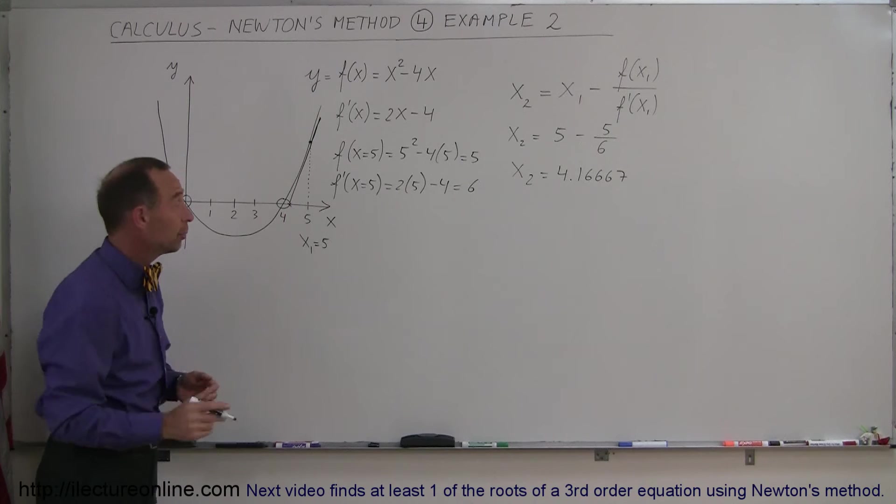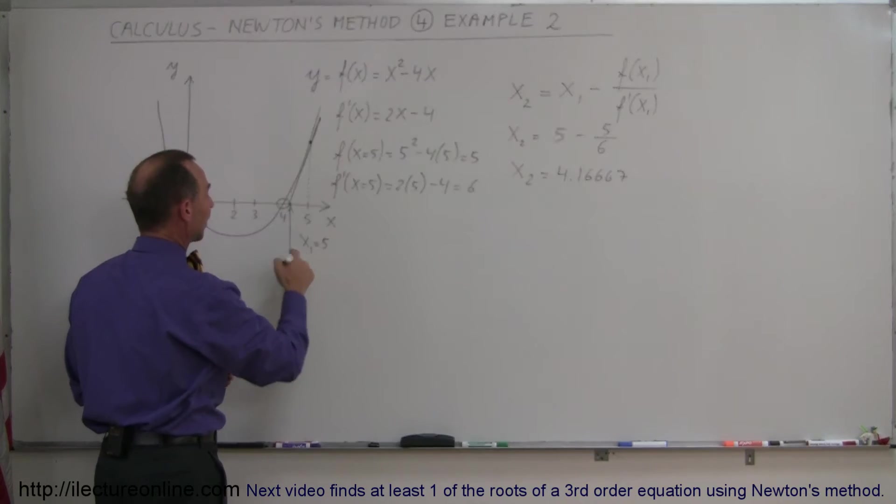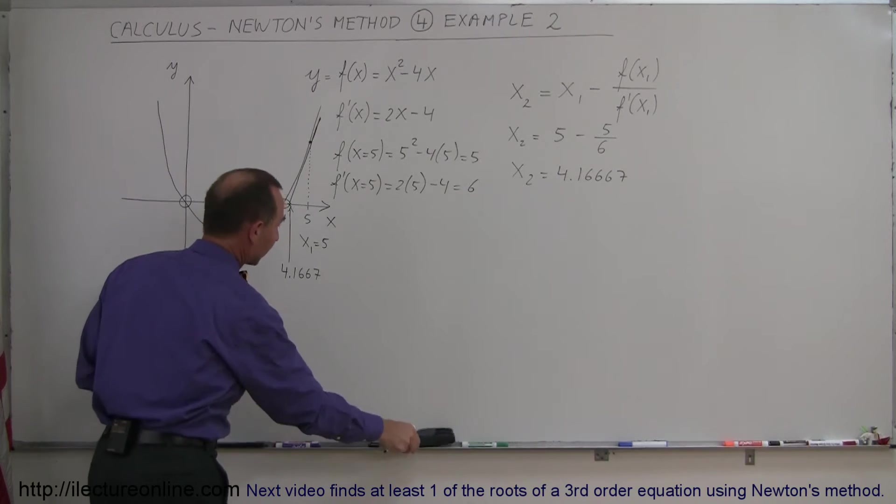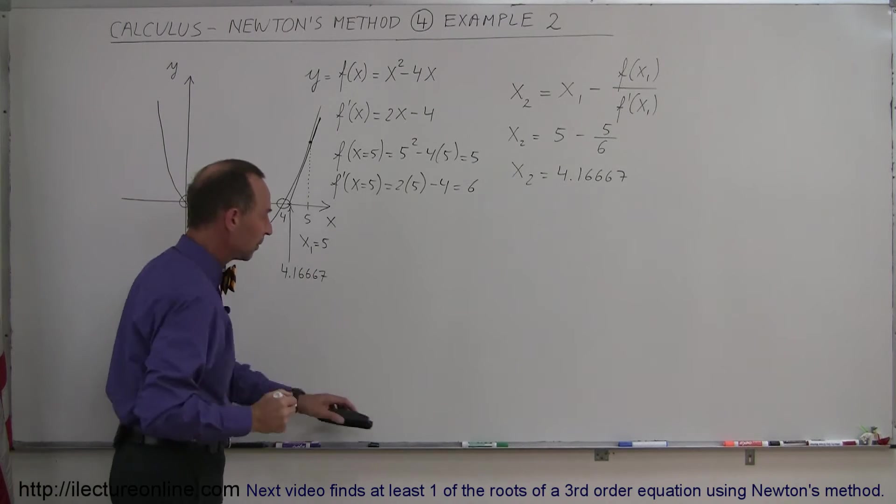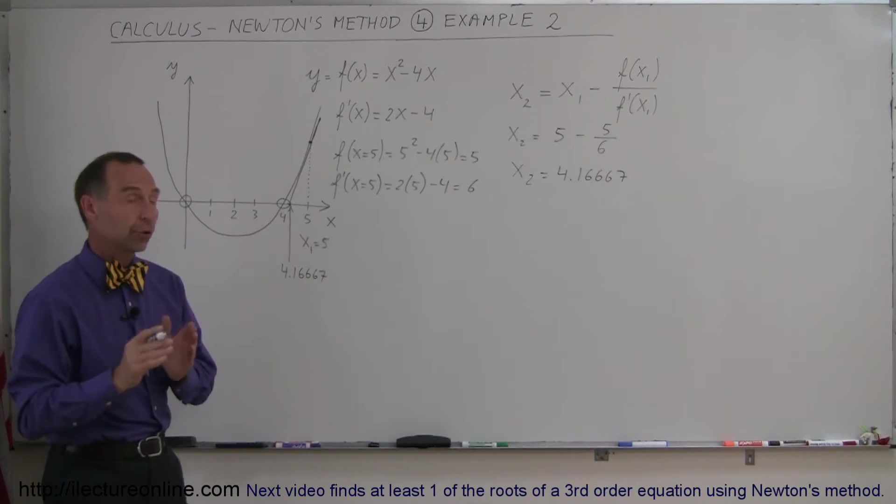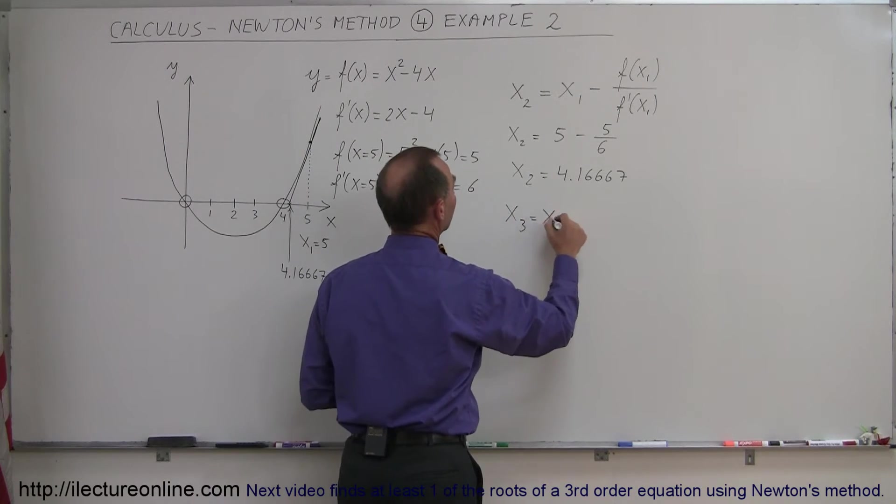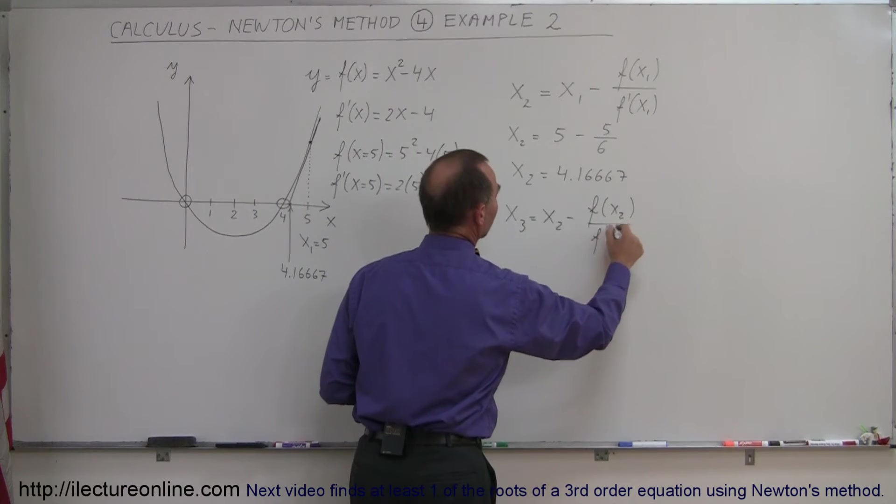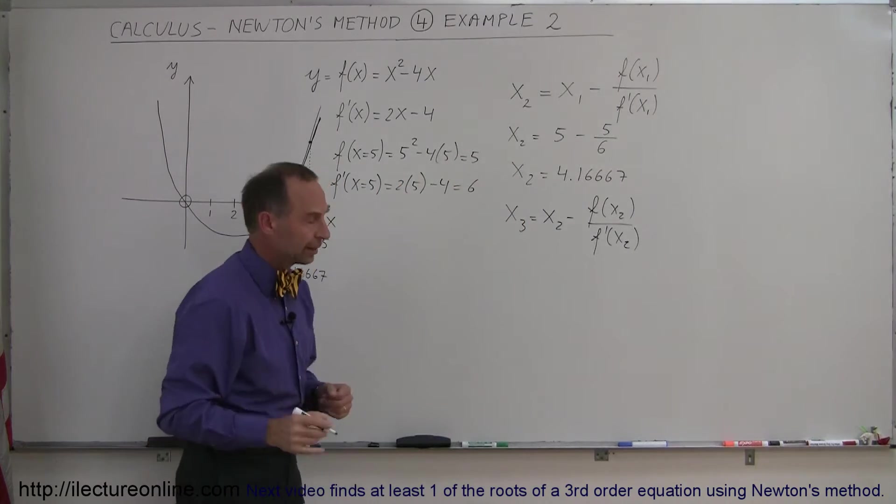All right, that's my second point. You can see my second point right there will be much closer to the root than my first guess. So 4.1667 or 6667, however many decimal places you want to go out and round it off. All right, so let's use that value as our next point. So now we're going to find our third point, x3, which should be equal to x2 minus the function evaluated at x2, divided by the derivative of the function evaluated at x2. At this point, we're probably going to need a calculator.